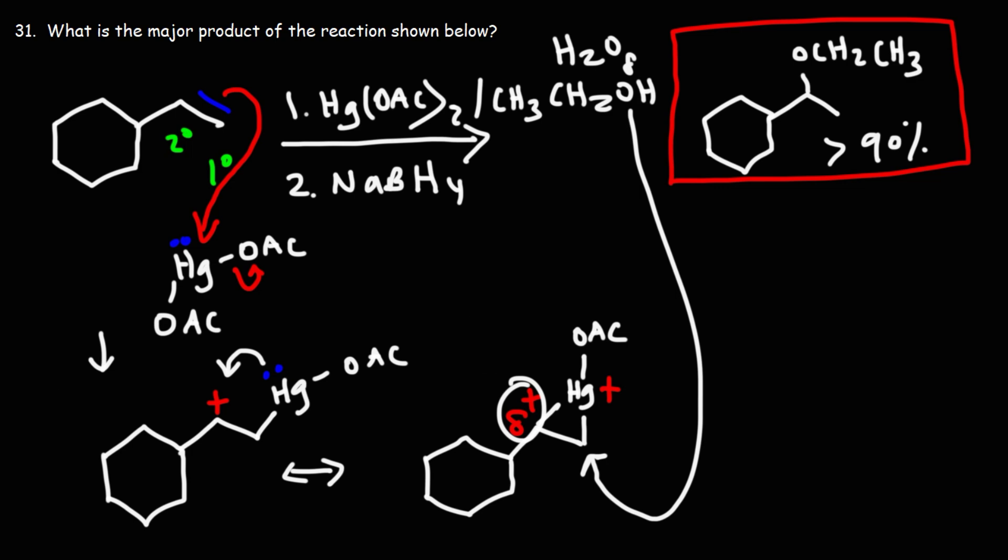So in this case, due to that electrostatic driving force, it's going to go for the more substituted carbon, because it has more positive charge. When it does that, this bond is going to break, pushing those electrons back to the mercury atom.